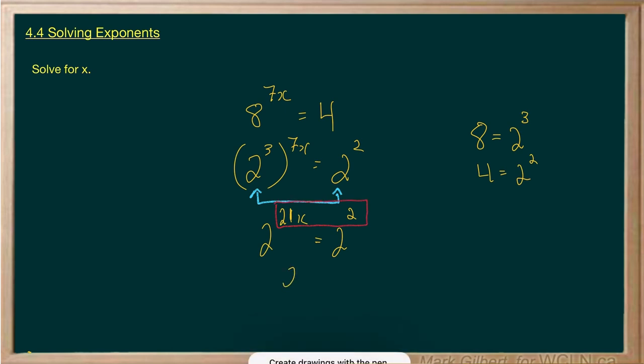So we have 21x equal to 2. Divide both sides by 21. And we get x is equal to 2 over 21.